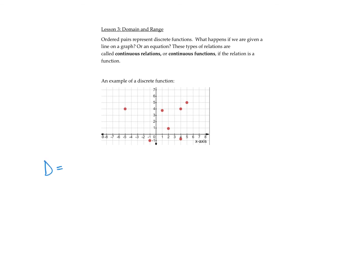The domain will be all the x-values for these specific points. I see a point when x is negative 5, a point when x is negative 1, a point when x is 1, a point at 2, two points at 4 but I only need to write 4 once, and a point when x is 5. So for example, this point here has coordinates negative 5 and 4.